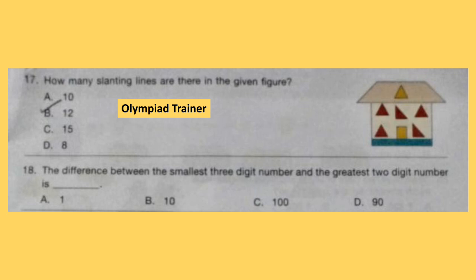Question 18. The difference between the smallest 3-digit number and the greatest 2-digit number is dash. The smallest 3-digit number is 100 and the greatest 2-digit number is 99, so the difference is 1. Option A is the answer.